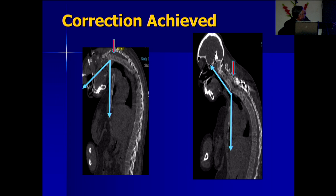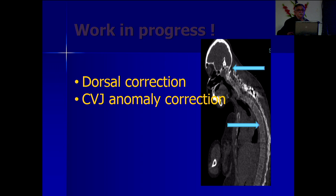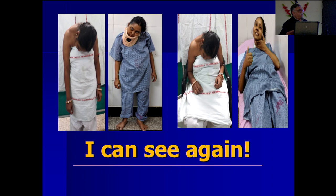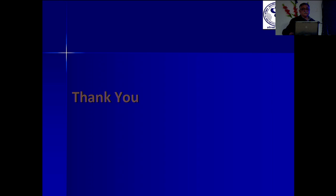This was the correction we achieved — we managed to get her neck up to this angle. We then needed to do correction in the dorsal spine as well to make her a bit straighter. After the first surgery she could at least see in front — earlier she couldn't see at all. After the second surgery she became even better and even straighter.